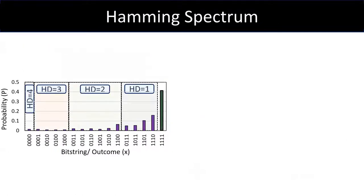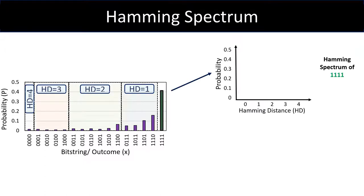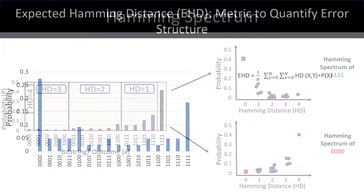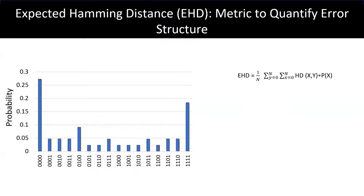To visualize the structure in Hamming space, we introduce the notion of a Hamming spectrum. The Hamming spectrum of the target bit string is the distribution of the probabilities of all output strings organized in the order of their Hamming distance from the target string. For example, the figure here shows the Hamming spectrum of 111. Here, the outcome 111, the target string is at Hamming distance zero, whereas all zero outcome is at distance four. Similarly, we can obtain Hamming spectrum of all zero string. We notice that all one string, which is the correct outcome, has strong nearby neighbors in the Hamming space.